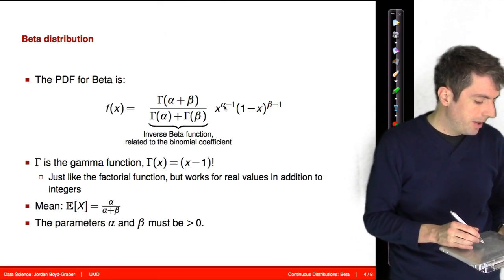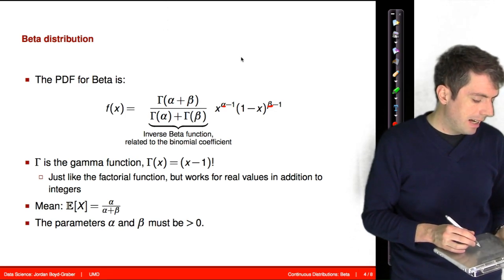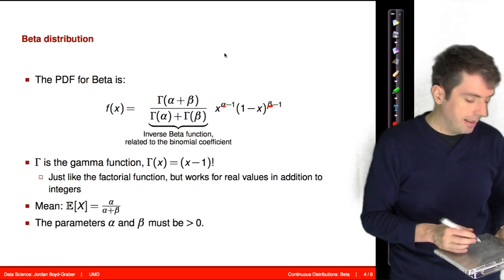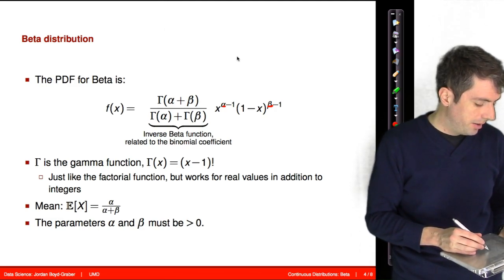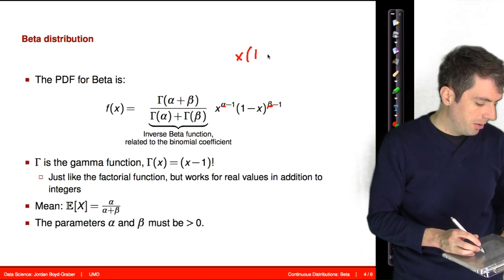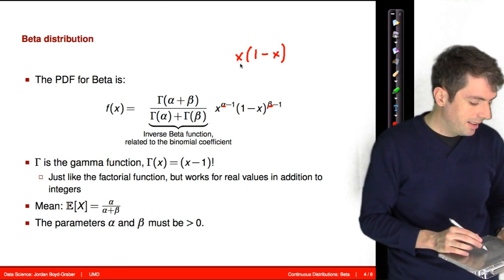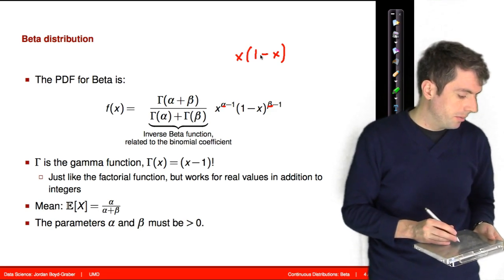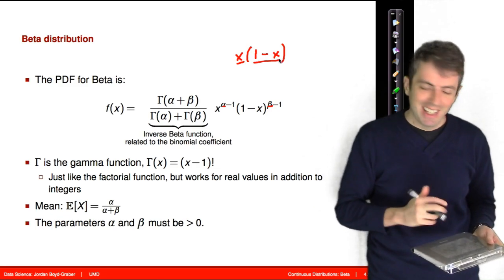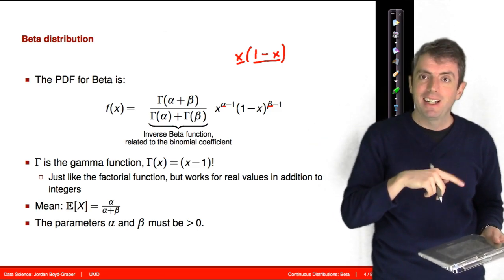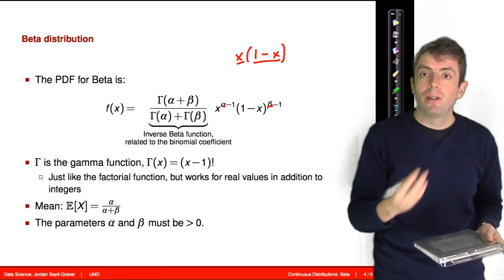You should also see that when alpha equals beta you get a symmetric function. For the sake of argument, let's say alpha equals beta equals 2, so you have x times 1 minus x. This is a symmetric function around one half — at one half the left-hand side equals the right-hand side, and then they flip. So when alpha equals beta, you have a symmetric function.